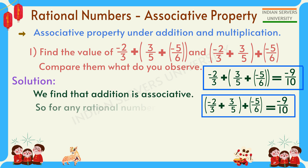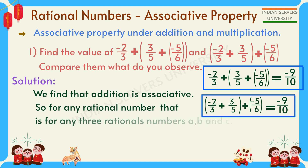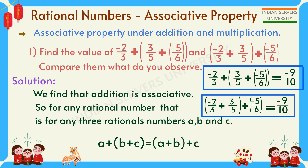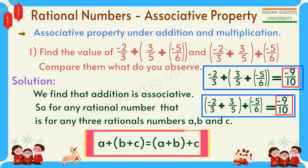For any three rational numbers a, b, and c: (a + b) + c = a + (b + c).